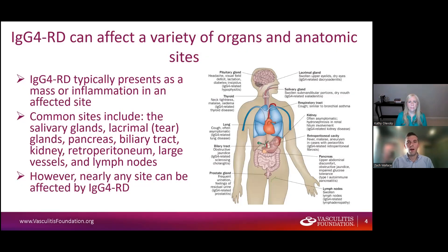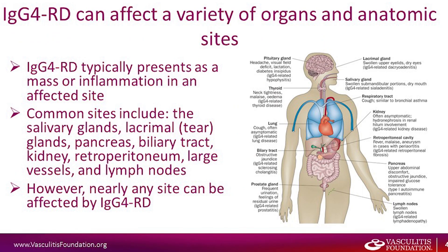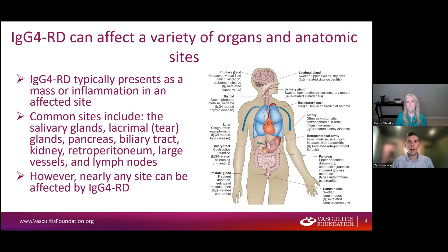Let's talk about what IgG4-related disease can do when it affects the body. This figure from a paper published a few years ago illustrates nicely what organs can be affected. When IgG4-related disease is present, what the disease tends to do is cause either a mass or some sort of inflammatory process in an affected site. The affected sites that are most common are listed here.